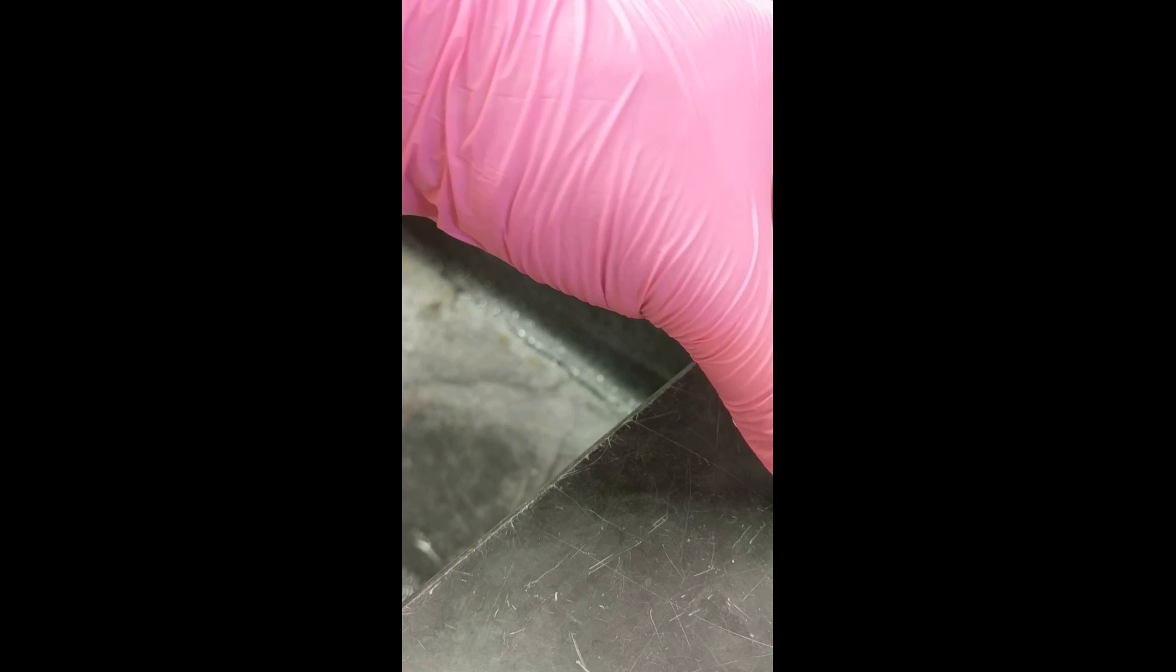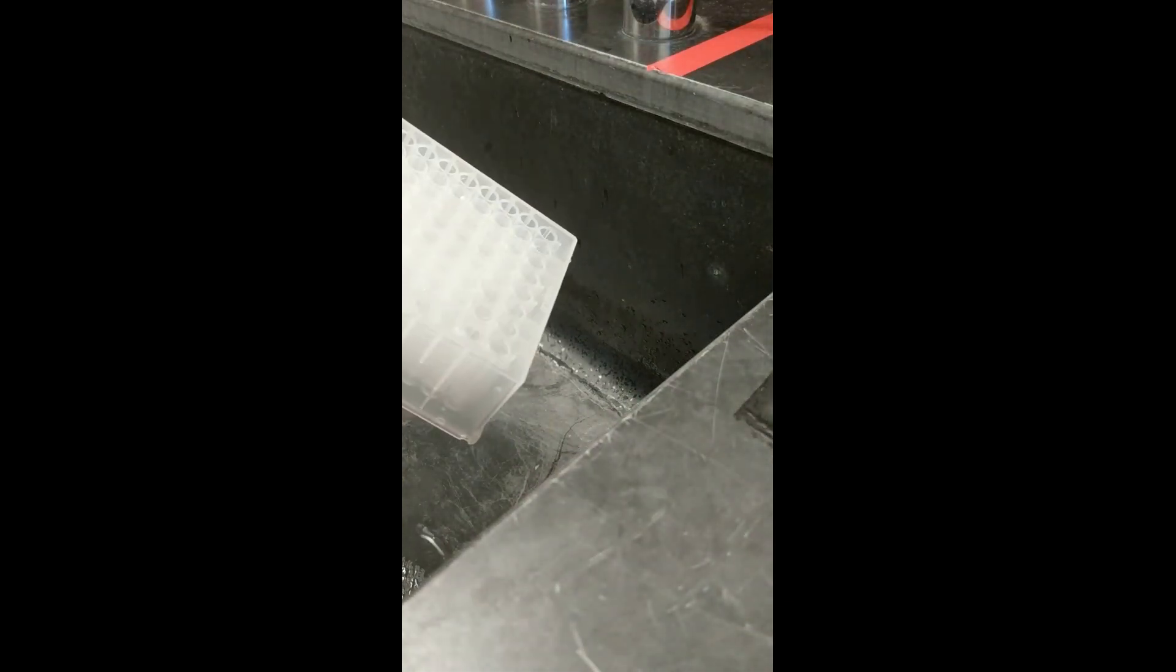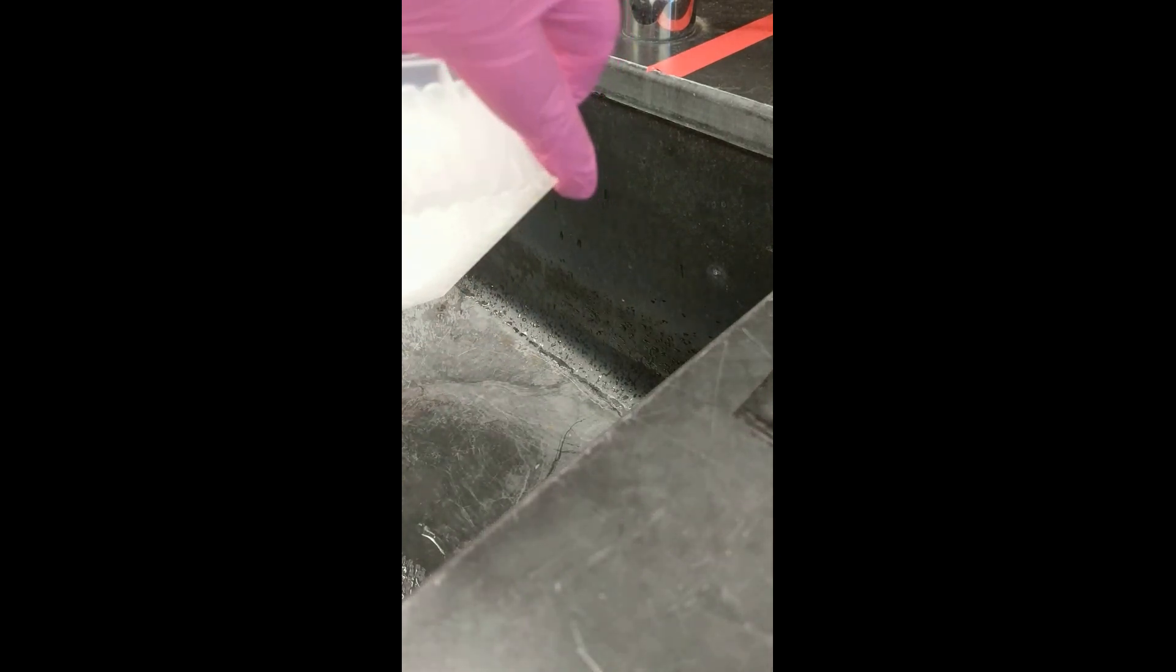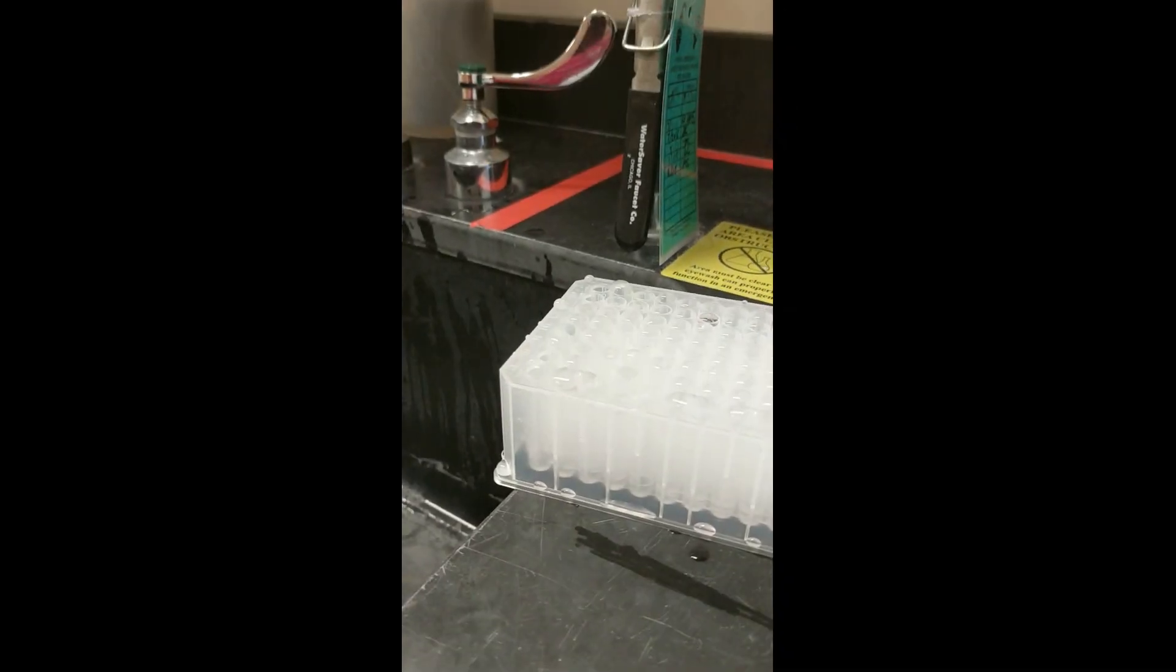After the DNA pellet has settled, you should decant out the solution very carefully and then add 700 microliters of 70% ethanol. The plate should then be centrifuged at 3600 RPM for 15 minutes.